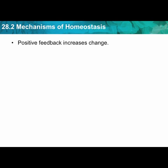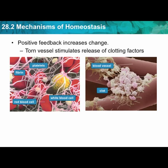Positive feedback increases change. A torn vessel stimulates the release of clotting factors. When there's a tear in a vein, clotting factors are released and increased, and the clot occurs. Then at a certain point, when it's not needed anymore, a negative feedback will shut the clotting process down. That's the basis of homeostasis — swings in many, many different things: the millions of chemical reactions that occur in our body to keep us alive, and events like clotting, breathing, shivering, and sweating.